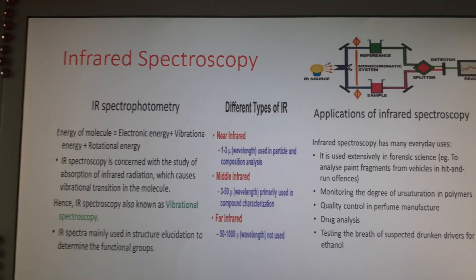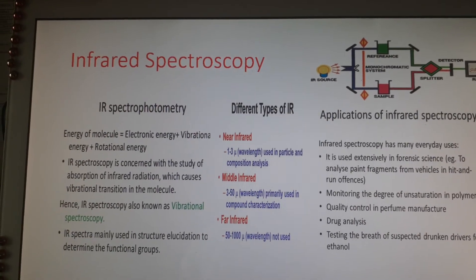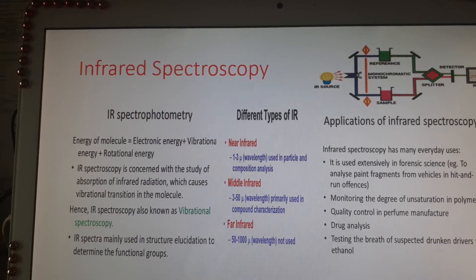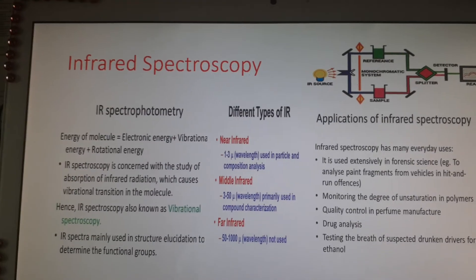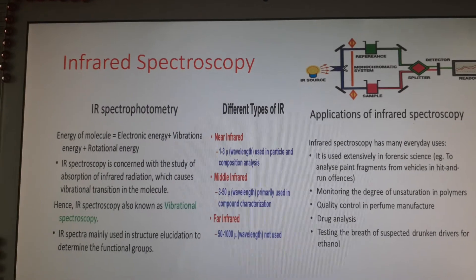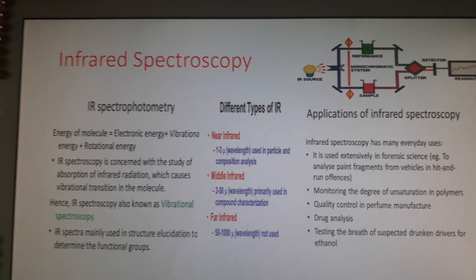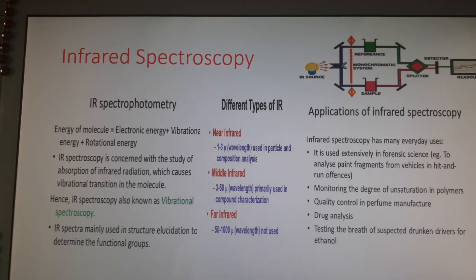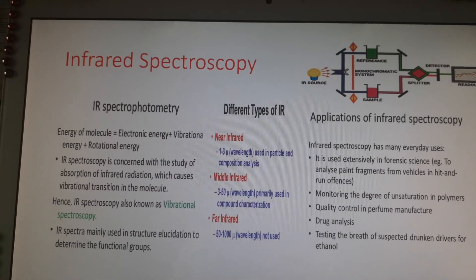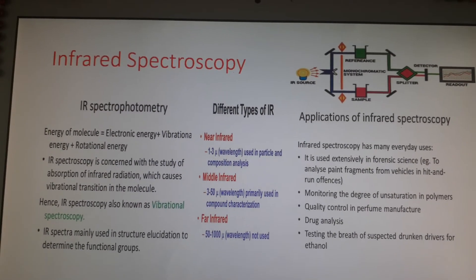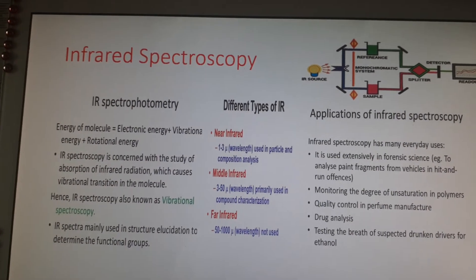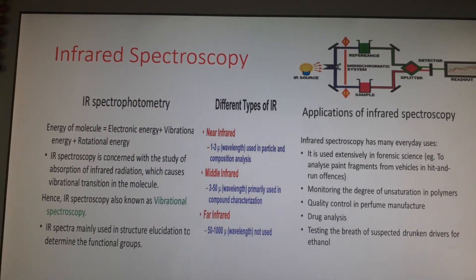When IR radiation is absorbed, the molecules vibrate with bond stretching and bending. This is the basic principle of IR spectroscopy. During vibration the molecules undergo a change in dipole moment, and when the frequency of the IR radiation matches the vibration frequency of the bonds, absorption takes place and the spectrum can be recorded. This vibration spectra can be used to determine the functional groups present in organic compounds.